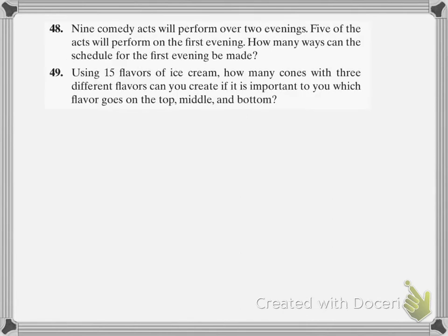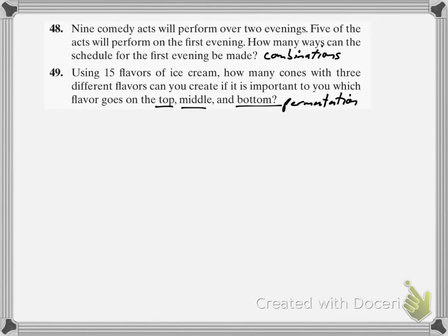Nine comedy acts will perform over two evenings. Five of the acts will perform on the first evening. How many ways can the schedule for the first evening be made? We're just picking five out of nine — not ordering who goes first or second — so this is a combination. Meanwhile, using 15 flavors of ice cream, how many cones with three different flavors can you create if it's important which flavor goes on top, middle, and bottom? That one's a permutation because order — top, middle, bottom — matters.